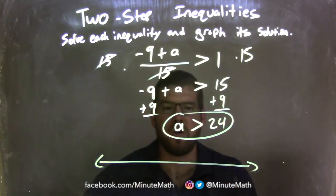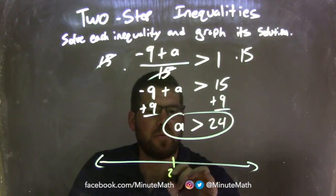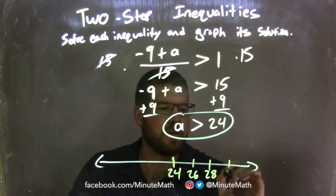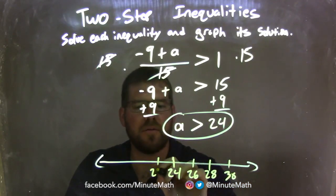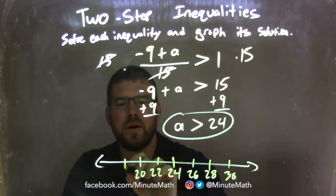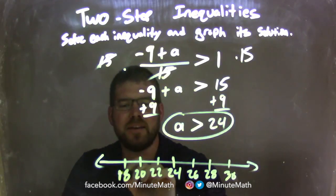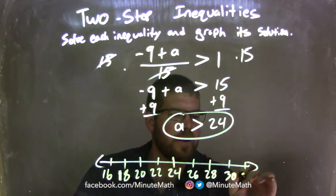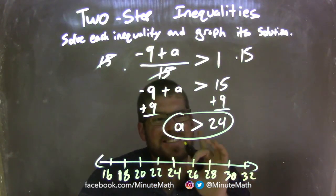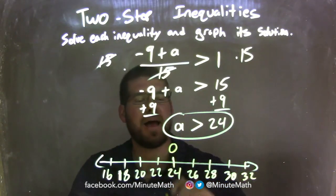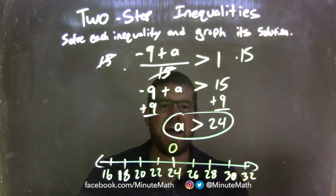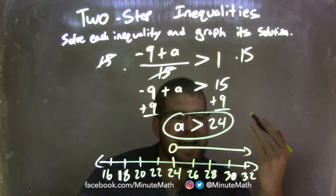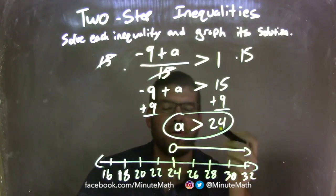Let's put 24 right in the middle and go by 2s: 26, 28, 30, 32, and 22, 20, 18, 16. We said a is greater than 24, so I have an open circle because it's not equal to 24. Then I shade to the right because we said a is greater than 24. Now I have a graph that represents my inequality, where a is greater than 24.